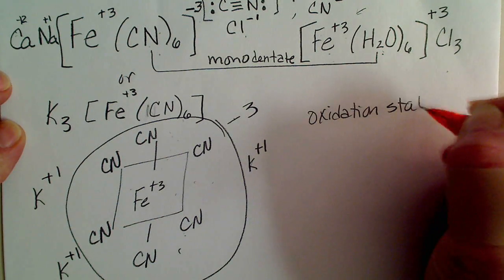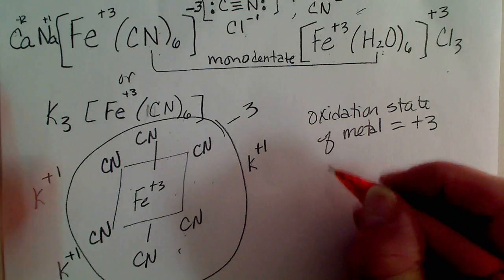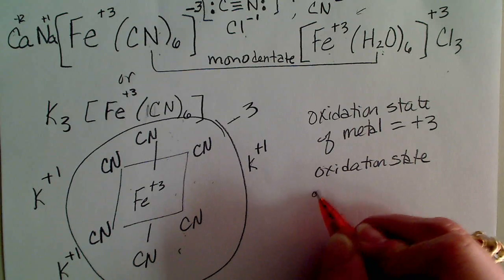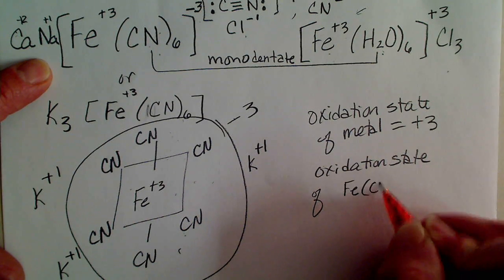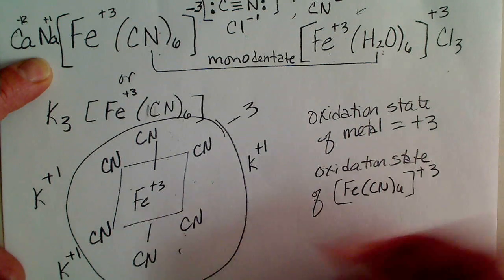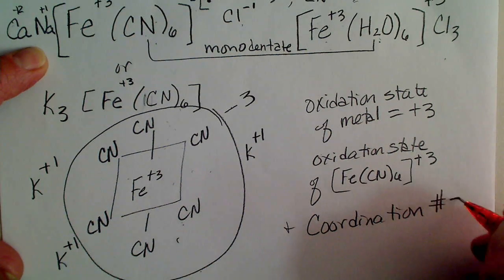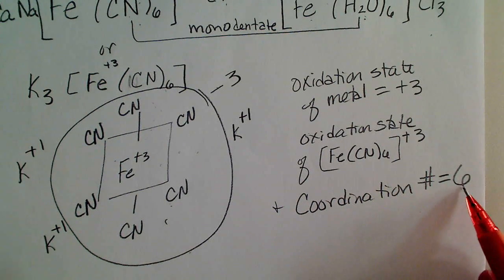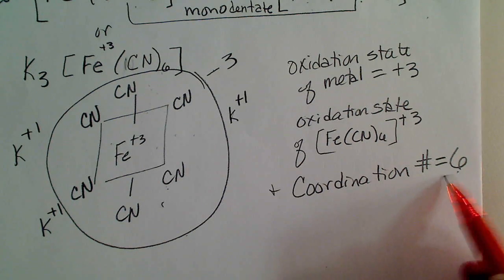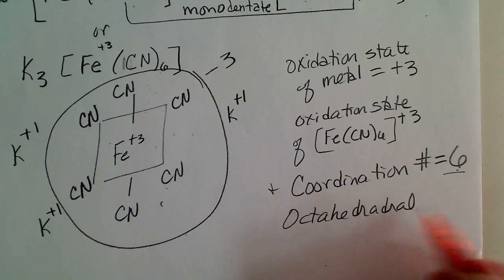So just to summarize here the oxidation state of the metal, that's kind of the primary valence is plus three, and the charge or the oxidation state of the complex, this would be the cyanide complex, is also a plus three, and the coordination number of the metal is six. And almost without exception, of course there's exceptions to every rule in chemistry, but at this level if we see a coordination number of six we know that automatically means an octahedral geometry.